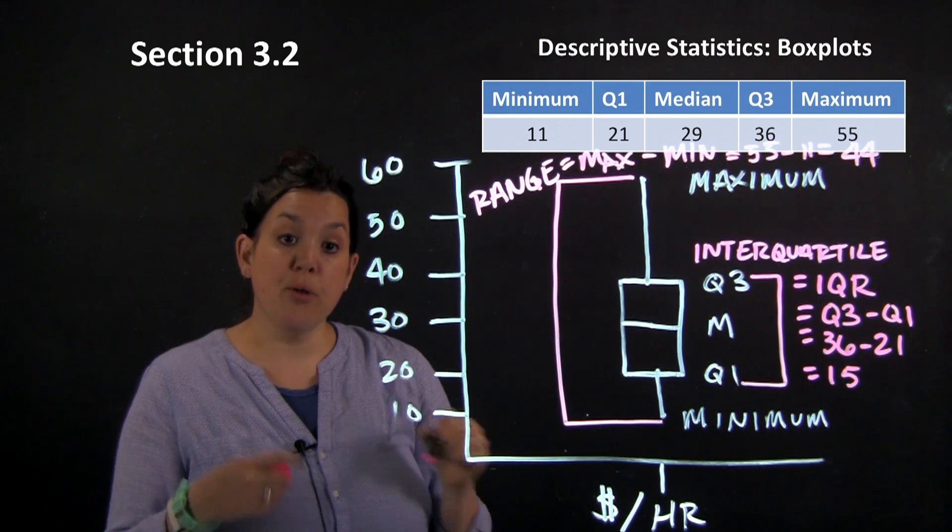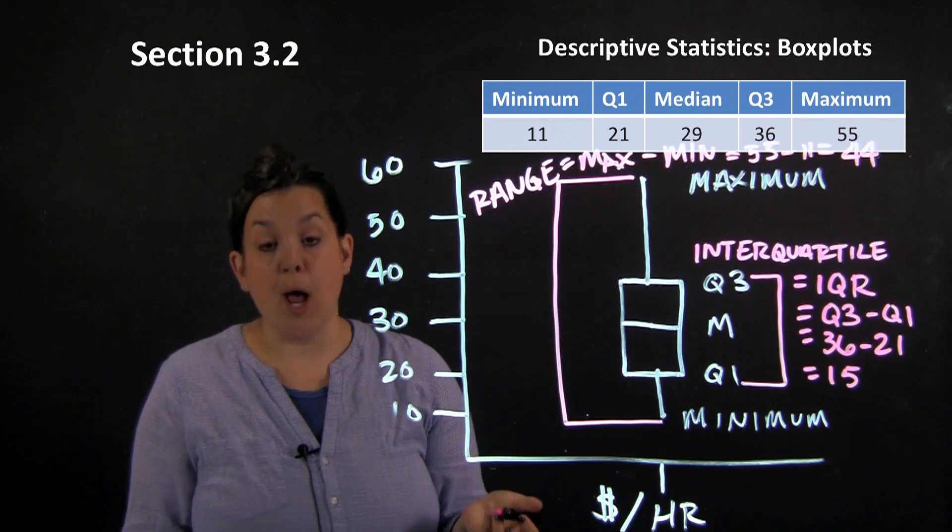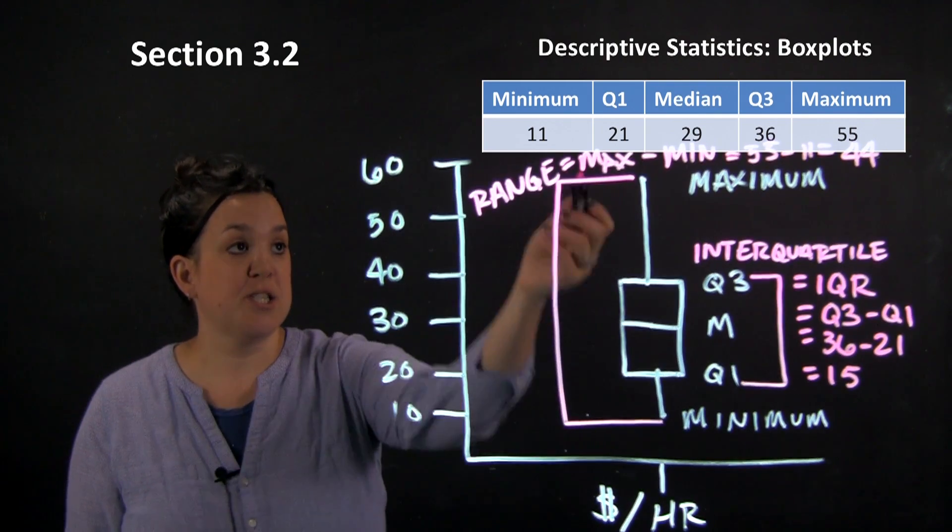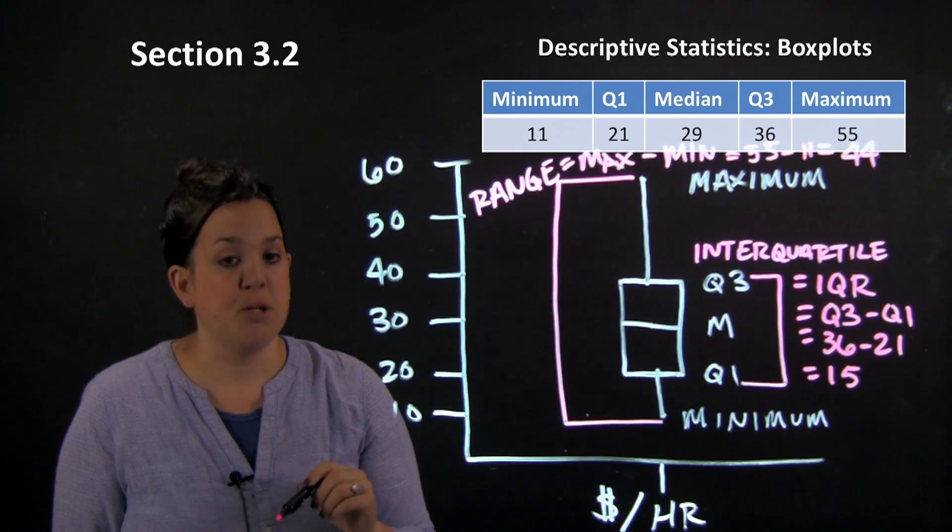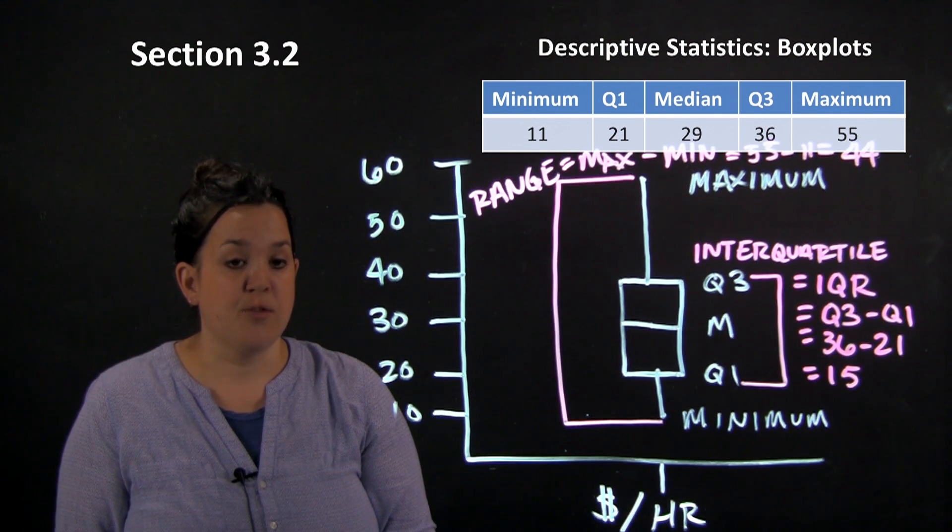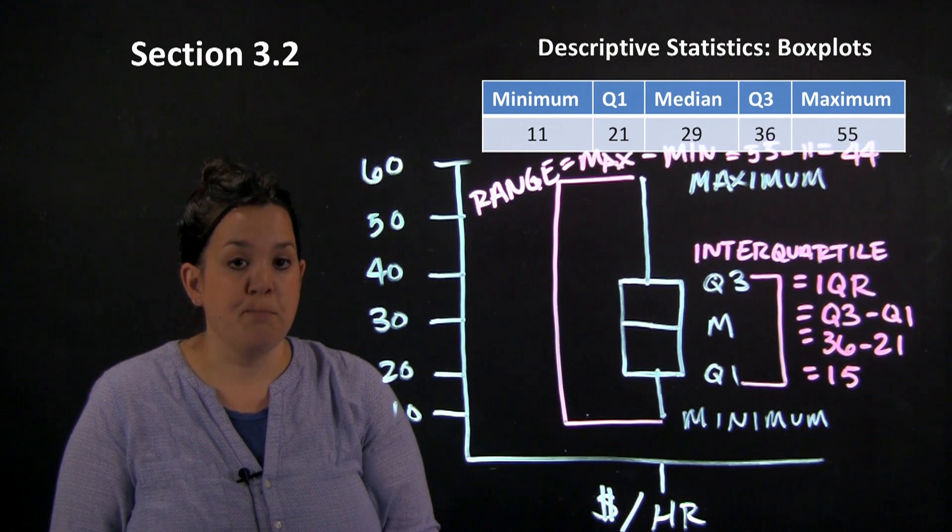So both of those are measurements of spread or variability. So range is the distance from the maximum to the minimum. And interquartile range is the distance from Q3 to Q1.